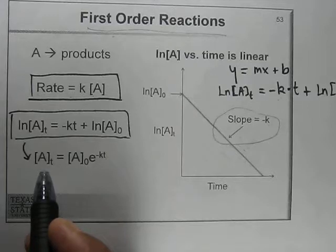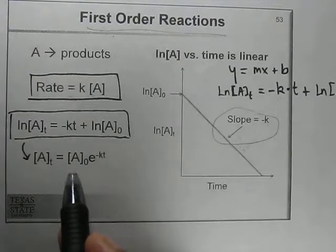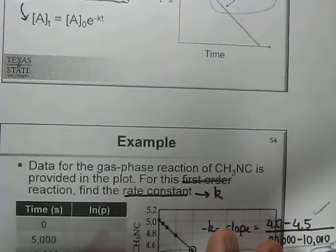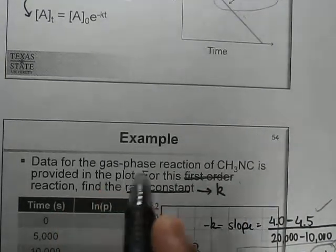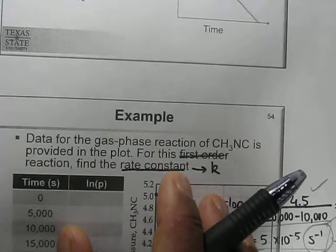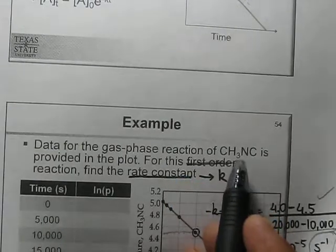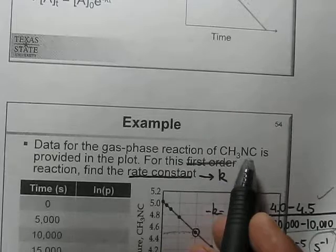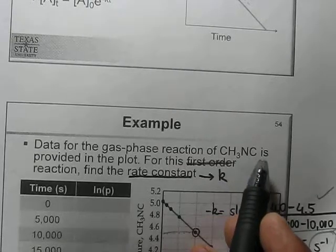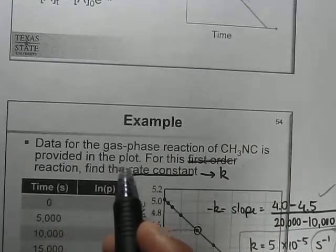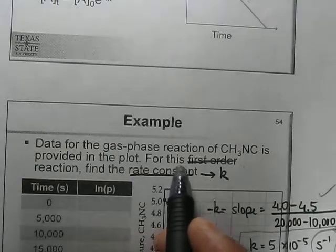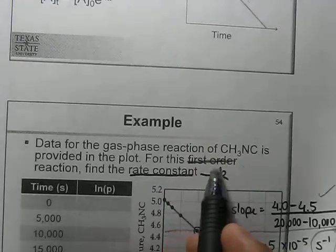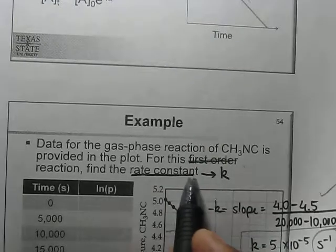This equation is in the form of an exponential or natural log term. The first question gives data for the gaseous phase reaction of methyl isocyanate (CH₃NC). A plot for this first order reaction is provided — find the rate constant k.